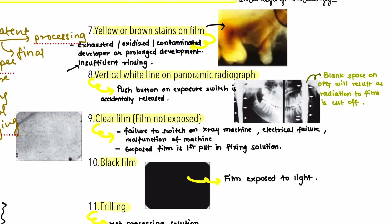The next error is the vertical white line on panoramic radiographs. It can occur due to accidental release of the push button during exposure, creating a blank space where radiation is cut off. To prevent this, keep the exposure button properly pressed until the entire exposure cycle is complete.